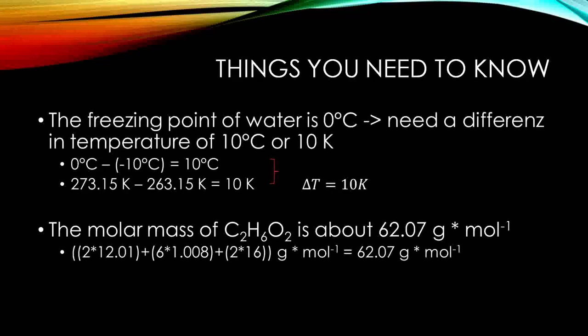First of all, some major things you need to know about this assignment. As you know, the freezing point of water is at 0 degrees Celsius, so you will need a difference in temperature of 10 degrees Celsius to get to minus 10 degrees Celsius, which is the same difference in Kelvin, because the difference in the Kelvin scale is the same as in the degrees Celsius scale.